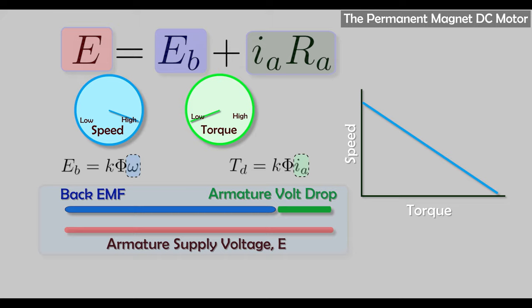This adjustment of armature voltage is known as armature voltage control — we can make adjustments to the supply voltage to regulate either speed or torque to a constant level. Note that for constant speed, torque is allowed to vary; for constant torque, speed must be allowed to vary. Armature voltage control is an excellent strategy, but it only works until you reach the rated voltage of the DC motor. At that point, we're forced to use a different method known as flux weakening, which we'll discuss later.